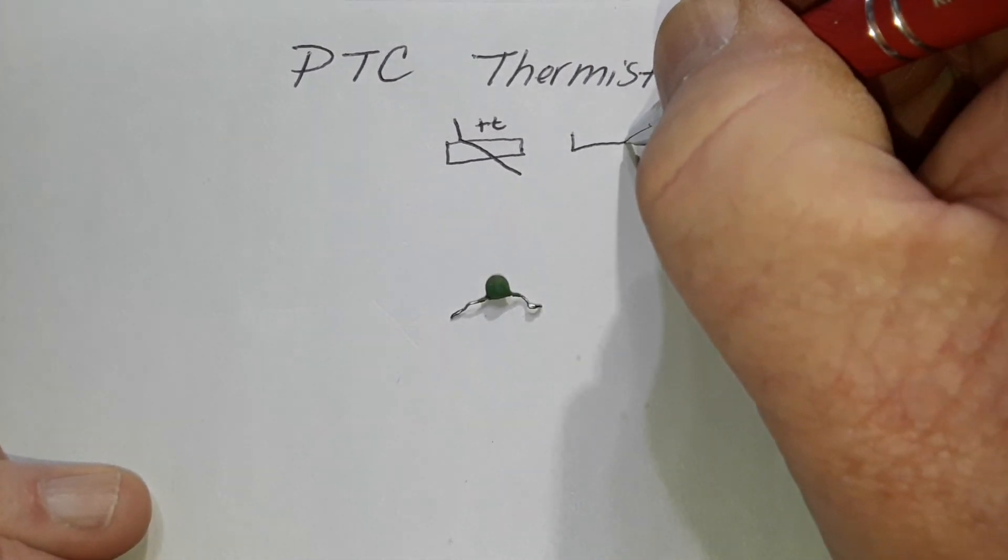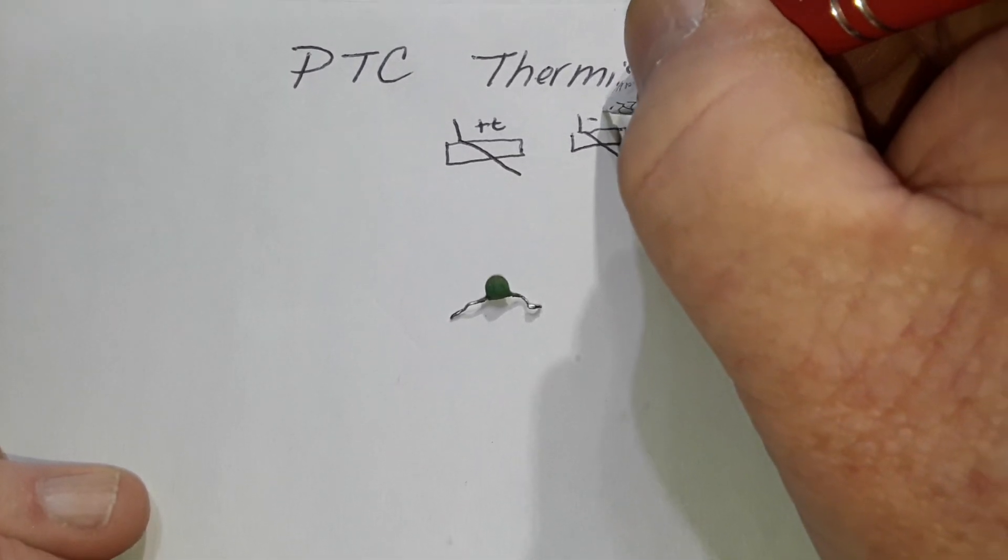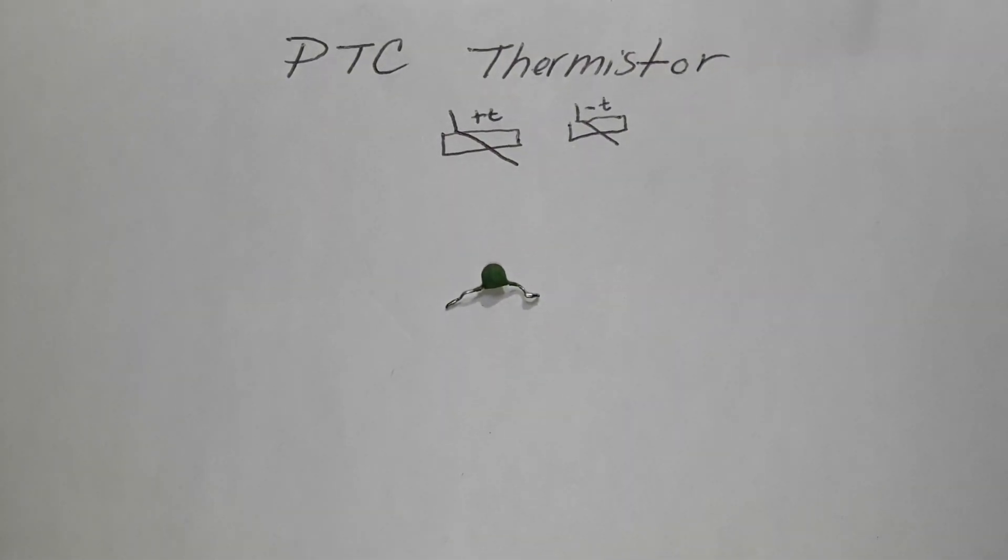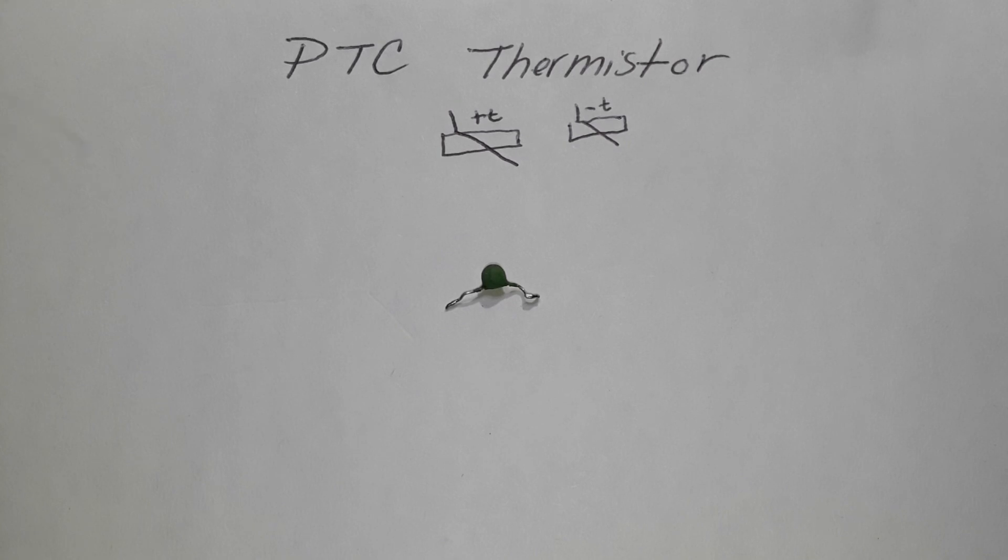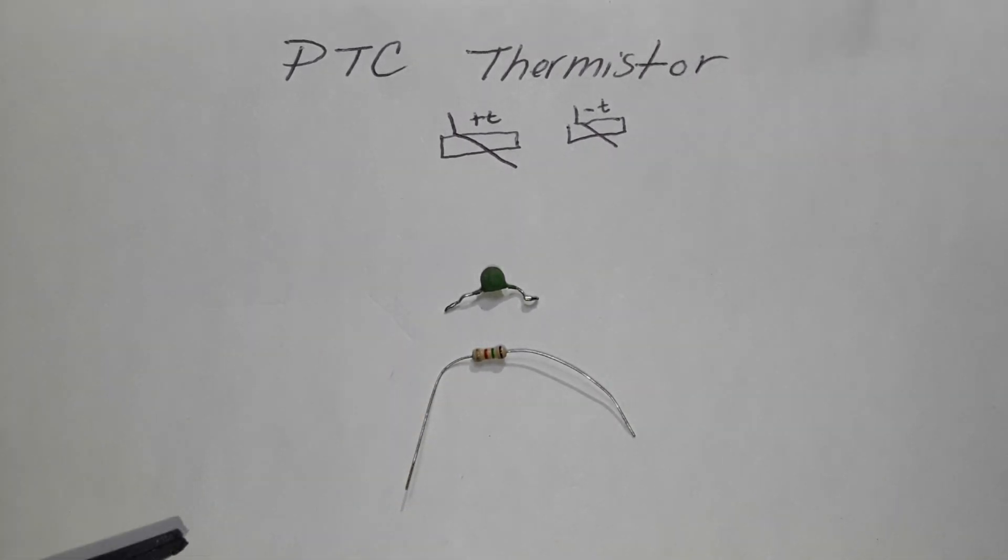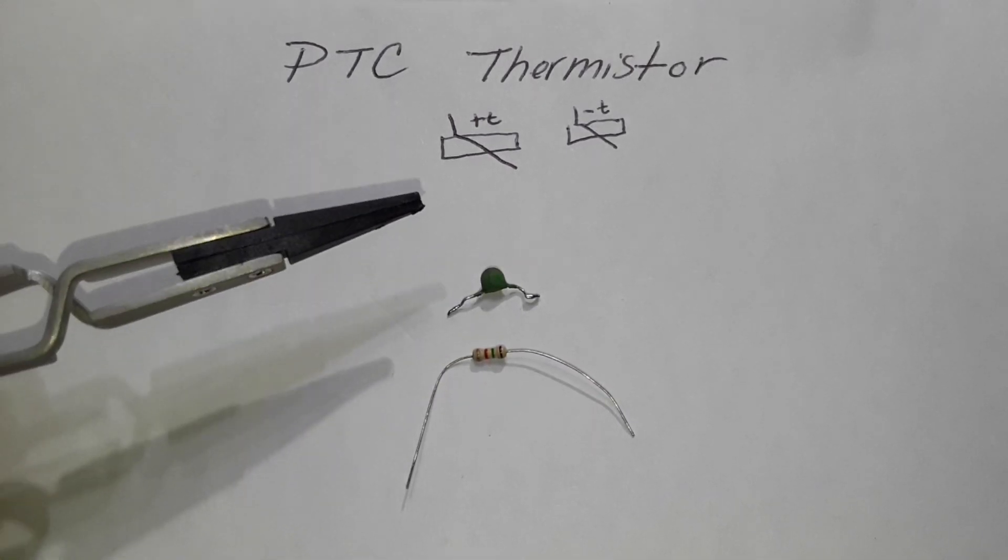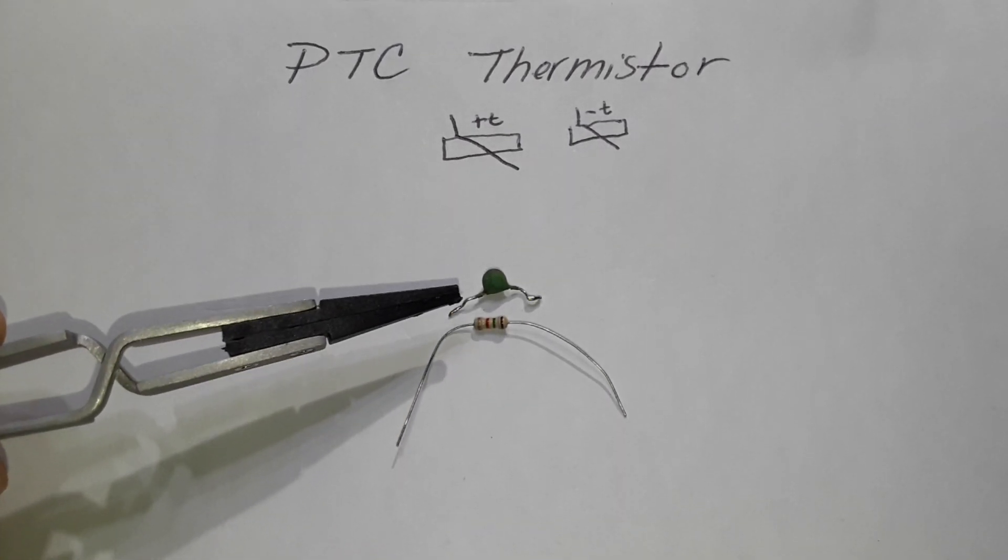There is also a negative temperature coefficient that will be marked minus T. And what these guys are, are special resistors that are able to act as a resettable current fuse. So, in a lot of ways, they are like a standard resistor. They are non-polarized. They have two leads.